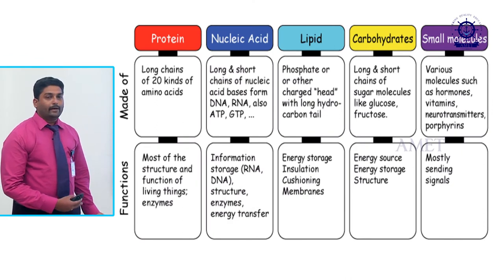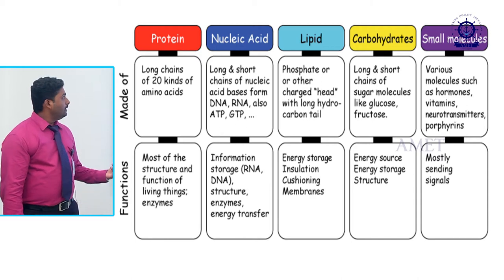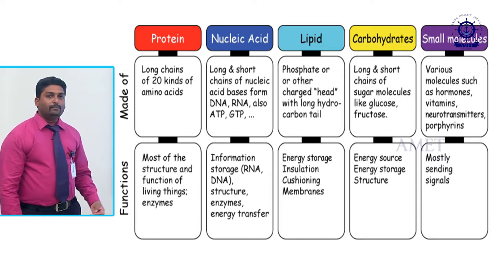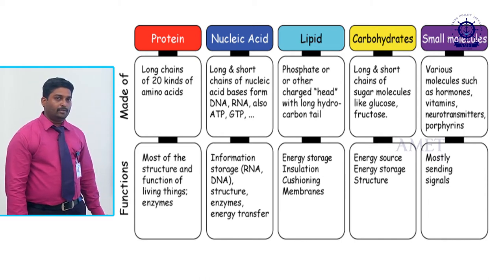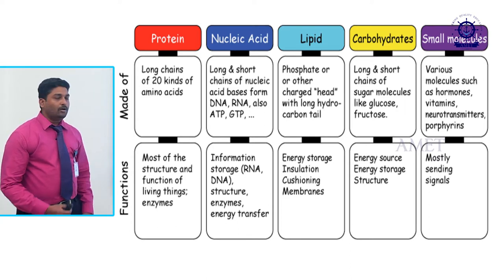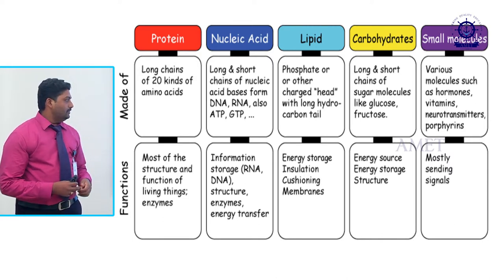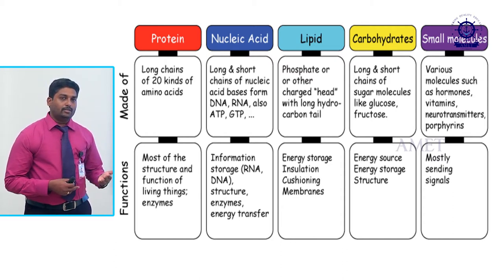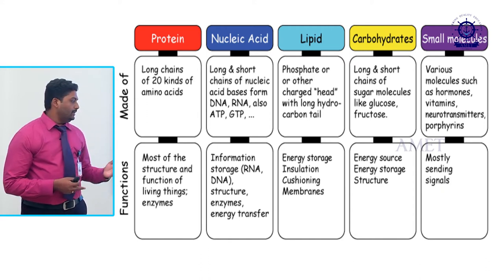Here is a short description of the macromolecules — what they are, how they are made up of, and what are their functions. Proteins are long chains made up of 20 amino acids and are the building blocks of cells. Nucleic acids are long or short chains of nucleotides forming ATP and GTP; their function is carrying information as a messenger from one generation to the next — called DNA and RNA. They have main functions in structure, enzymes and energy transfer.